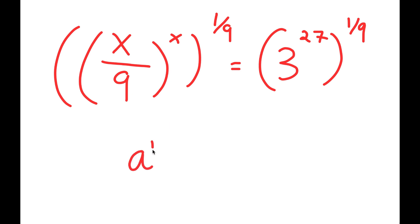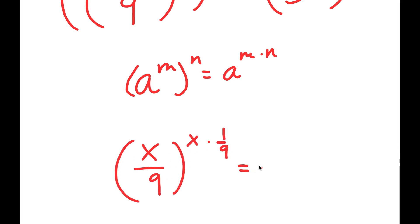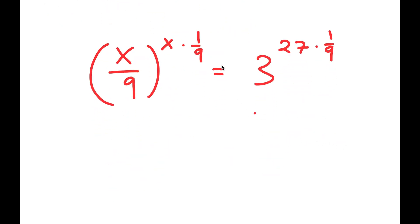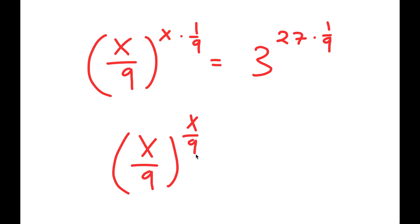If I have something in the form a to the power of m to the power of n, this is equal to a to the power of m times n. So x over 9 to the power of x to the power of 1 over 9 equals x over 9 to the power of x times 1 over 9, which equals 3 to the power of 27 times 1 over 9. Since x times 1 over 9 is x over 9, I get x over 9 to the power of x over 9 is equal to 3 to the power of 3, which is 3.